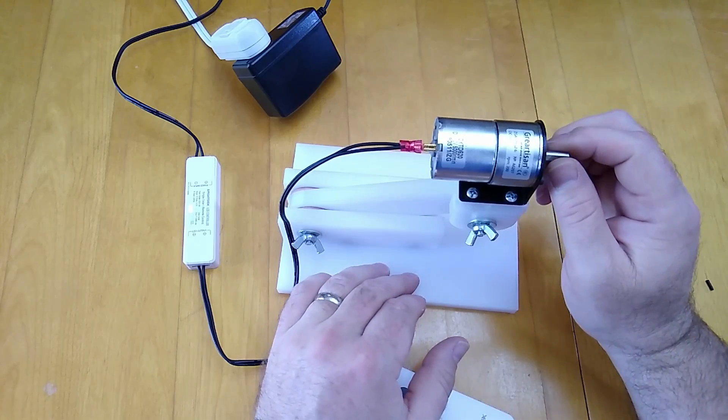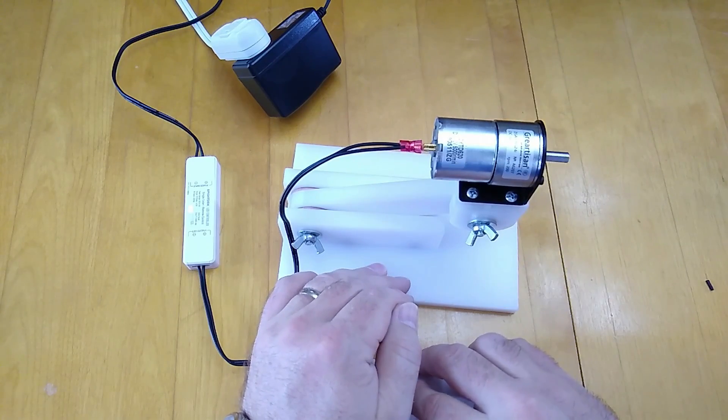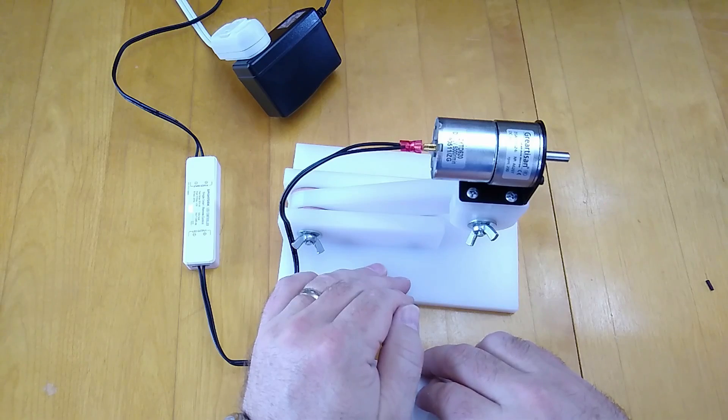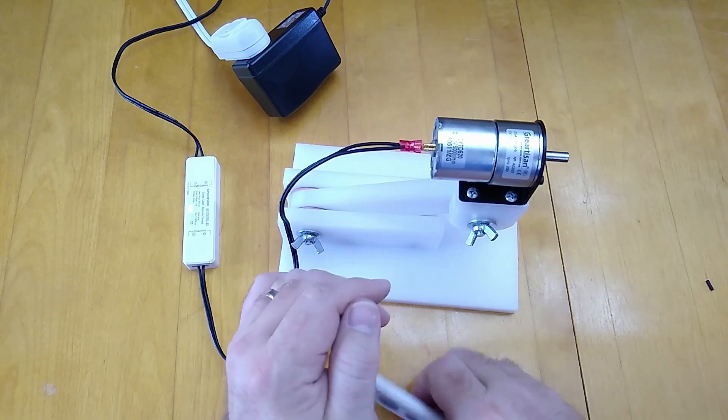Overall a wired pulse width modulator like I've shown on previous videos is going to give you a lot better low-end control. That's something to keep in mind if you want the most low-end speed control. If you can get by without it and make do, then the wireless ones are really convenient and simple to install, especially this one.